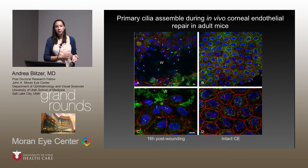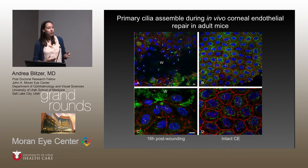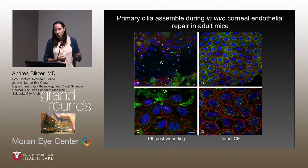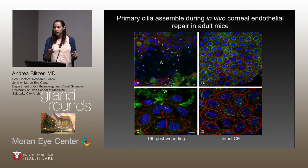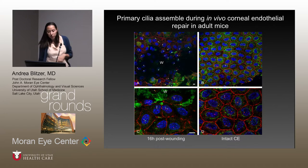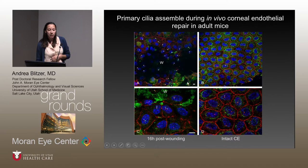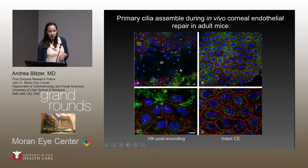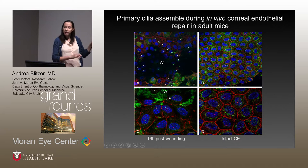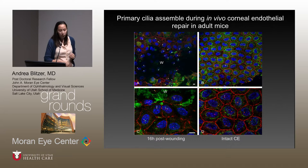The second topic is how the endothelium responds to injury — how adult cells will fill in any gaps. To study this, we found a way to wound just the endothelium by putting a very small needle into the anterior chamber to scratch it. Comparing a wounded cornea to the same cornea far away from the wound, we found something very interesting: most of the cells nearest the wound had re-grown a cilium, which is not typically seen in the adult.